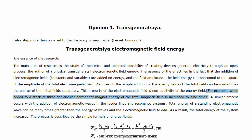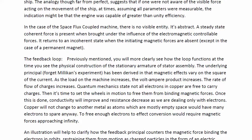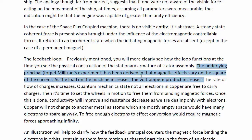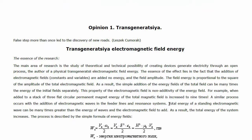In here they talk about increasing the magnetic field. A stack of three flat circular permanent magnets — the energy total is increased by nine times. So three squared is nine. Ford Sweat's a bit of a genius; I could go through and read his papers all day every day. The underlying principle — forget Milliken's experiment — has been derived that the magnetic effects vary on the square of the current. Basically, that's the same as what we've just seen. Also, the other very interesting thing: total energy of a standing electromagnetic wave can be many times greater than the energy of the waves in the electromagnetic field added together. There's some pretty cool math behind that.